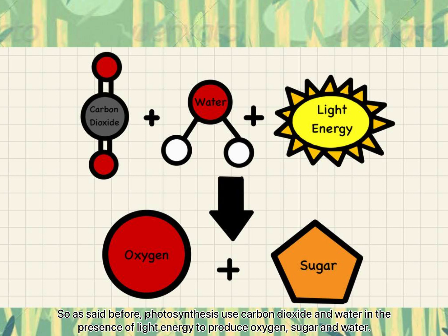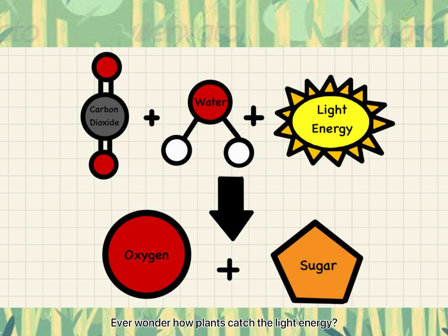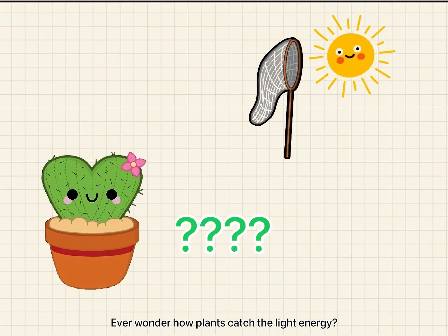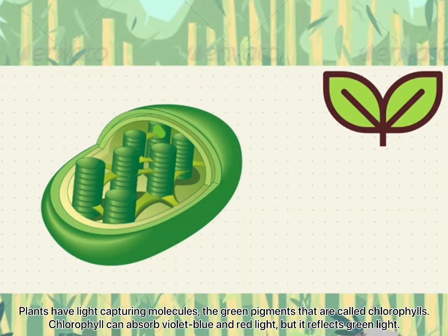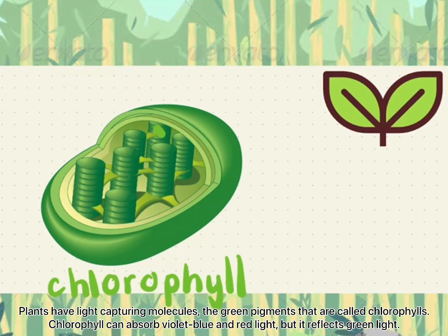So, as said before, photosynthesis uses carbon dioxide and water in the presence of light energy to produce oxygen, sugar and water. Ever wonder how plants catch the light energy? Plants have light-capturing molecules — the green pigments that are called chlorophyll.